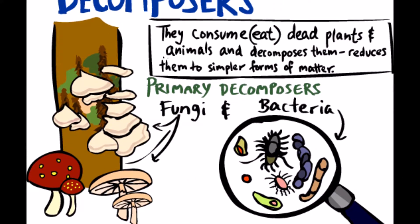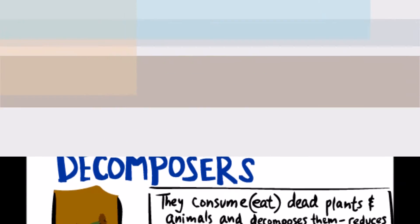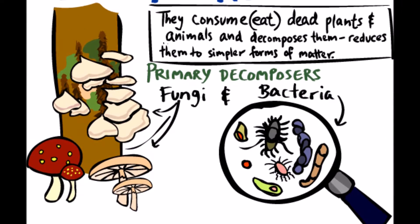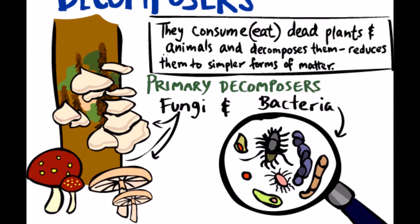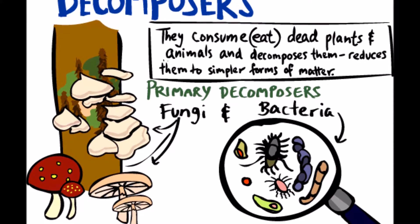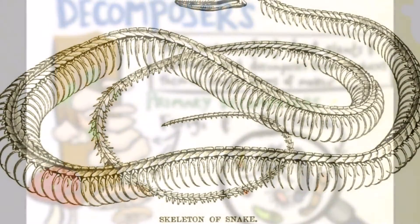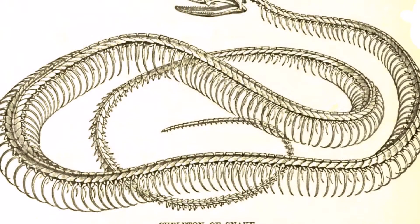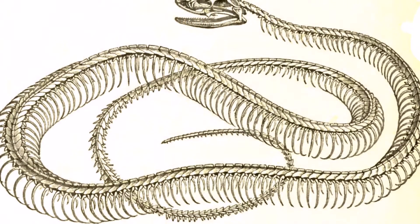The dead organisms — dead animals and plants — are eaten by decomposers in the ground. The carbon that was in their bodies is then returned to the atmosphere as carbon dioxide.